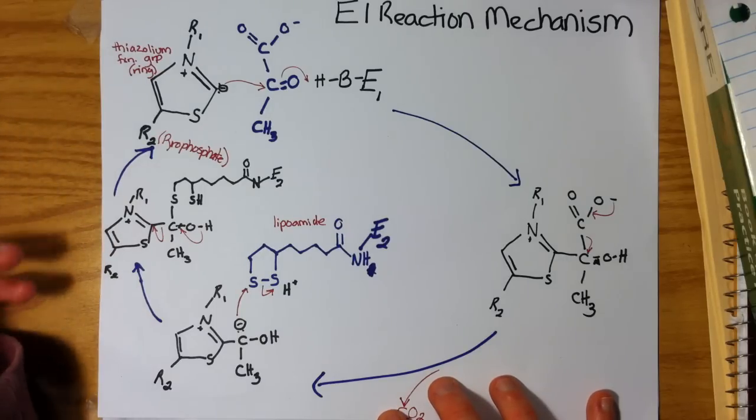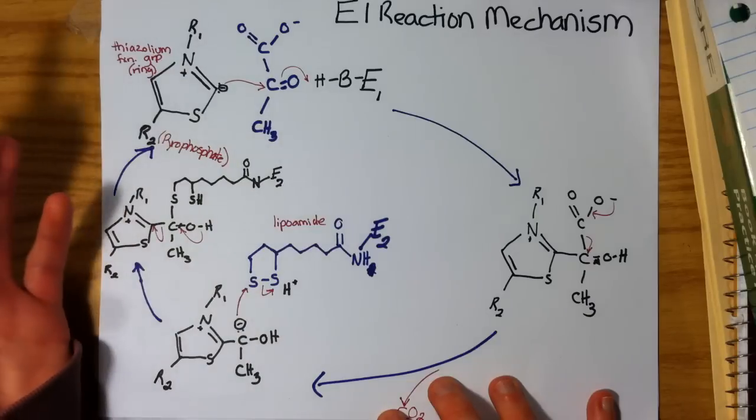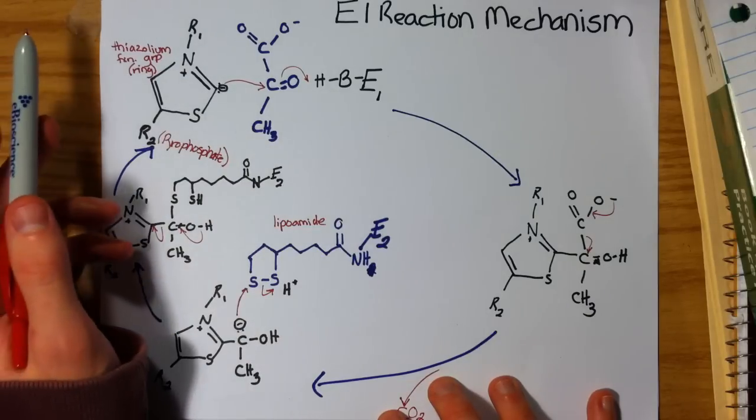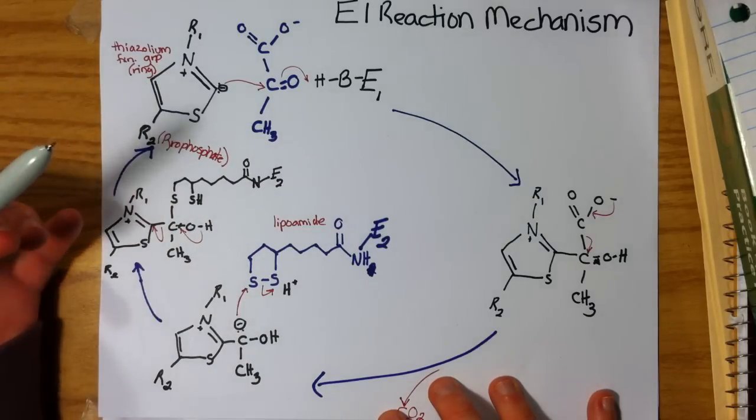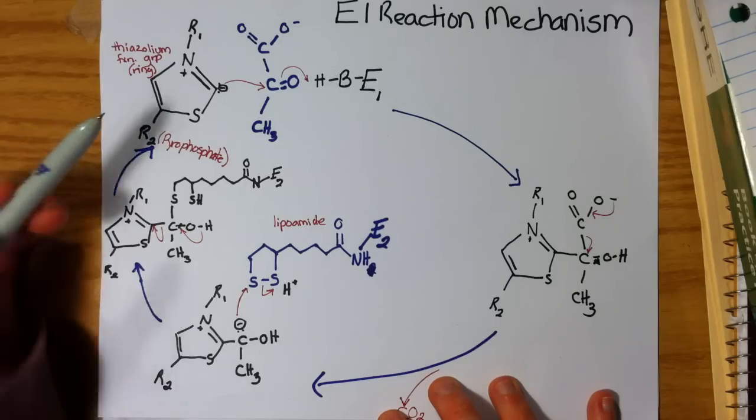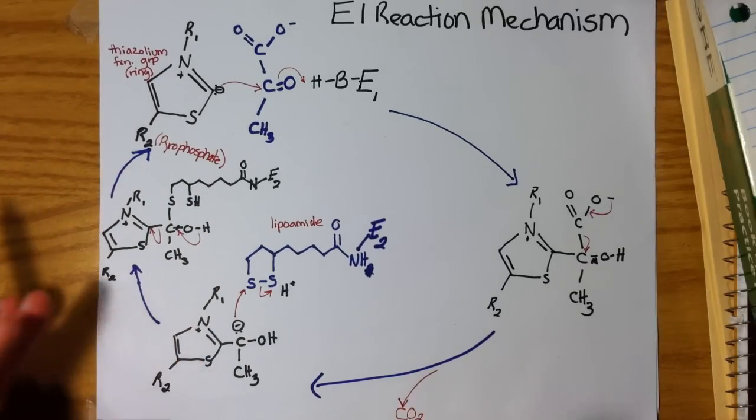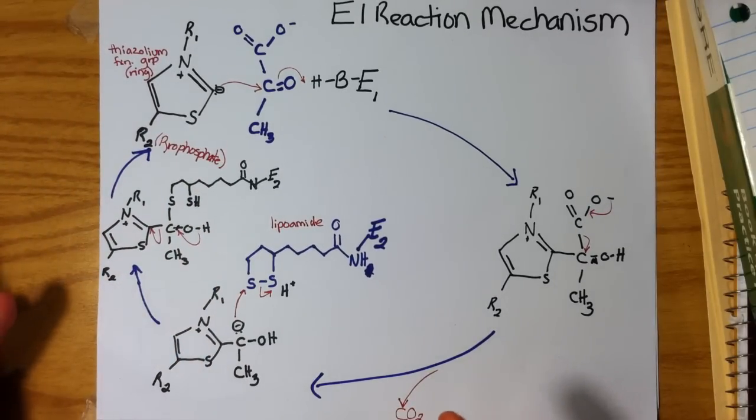So E1 mechanism. Here, right here in black, is our TPP, our thiamine pyrophosphate. The reactive part of the coenzyme is this thiazolium ring, which, if you look carefully, kind of resembles NAD+, if you remember from when we went over that in glycolysis.